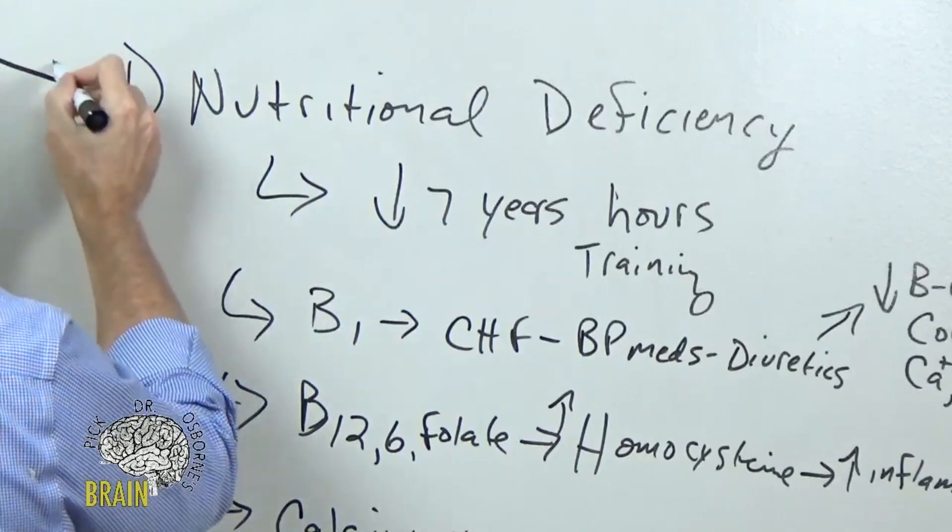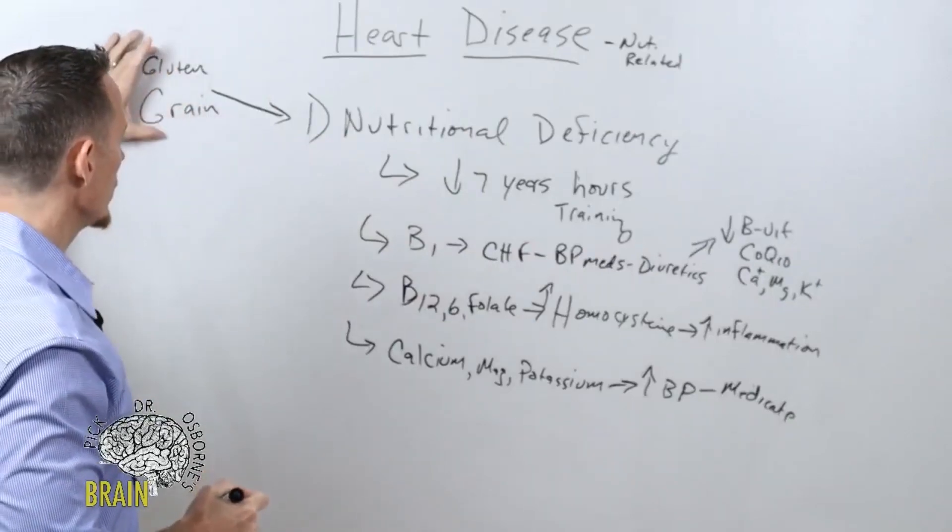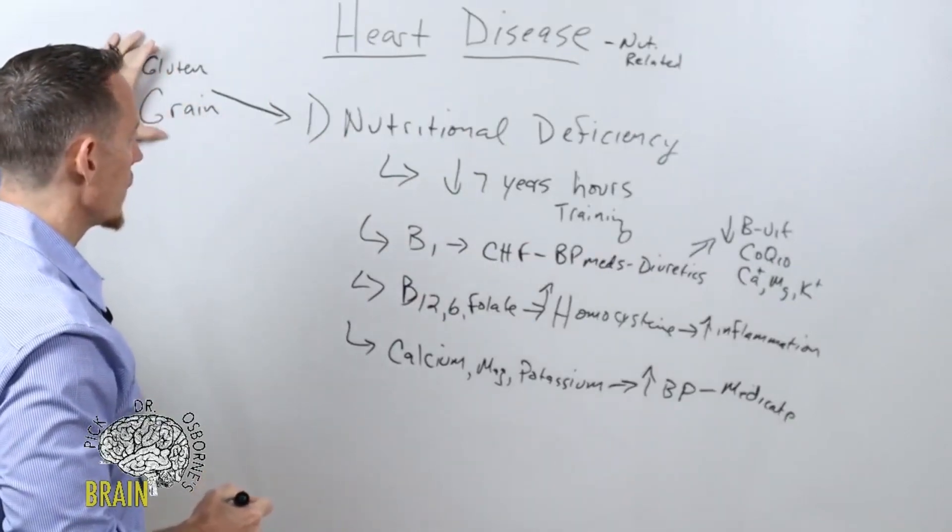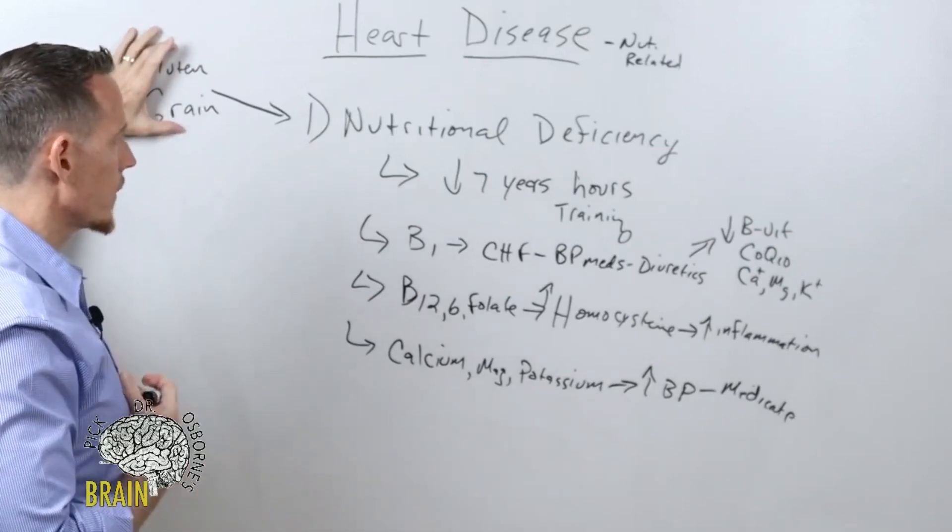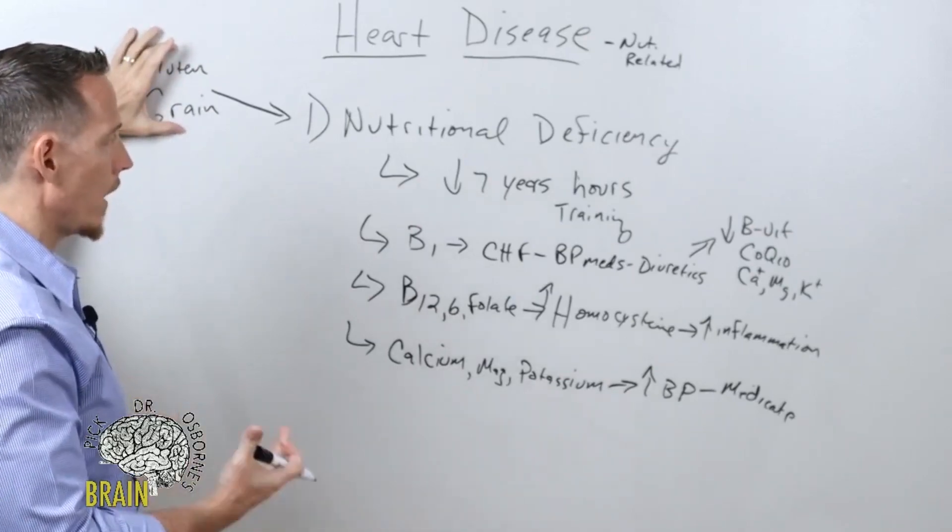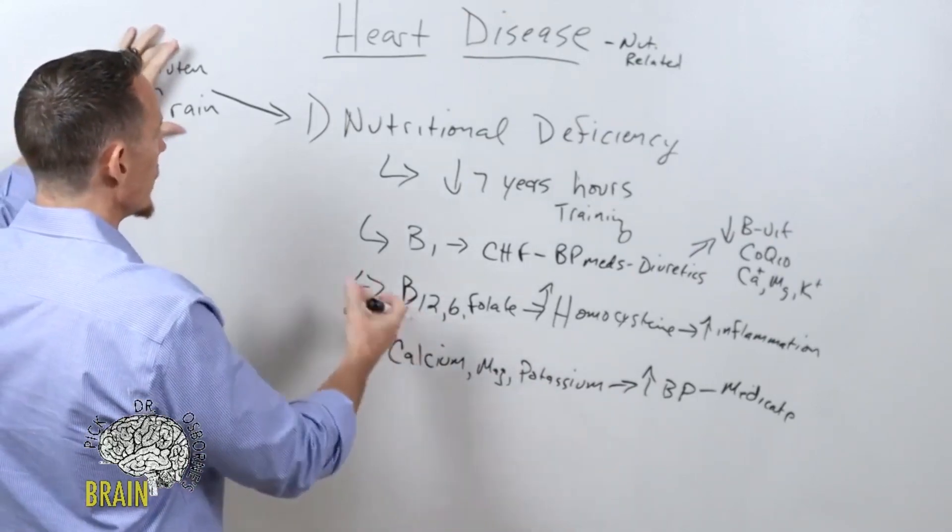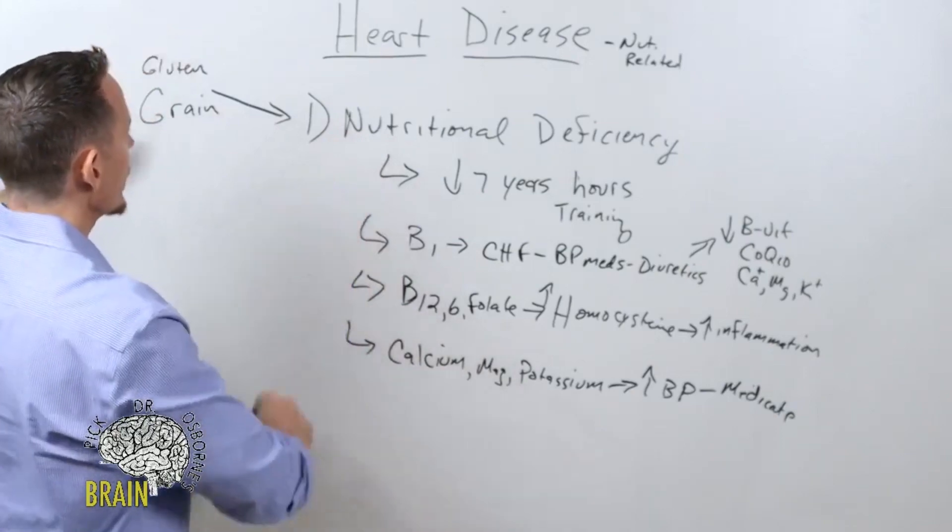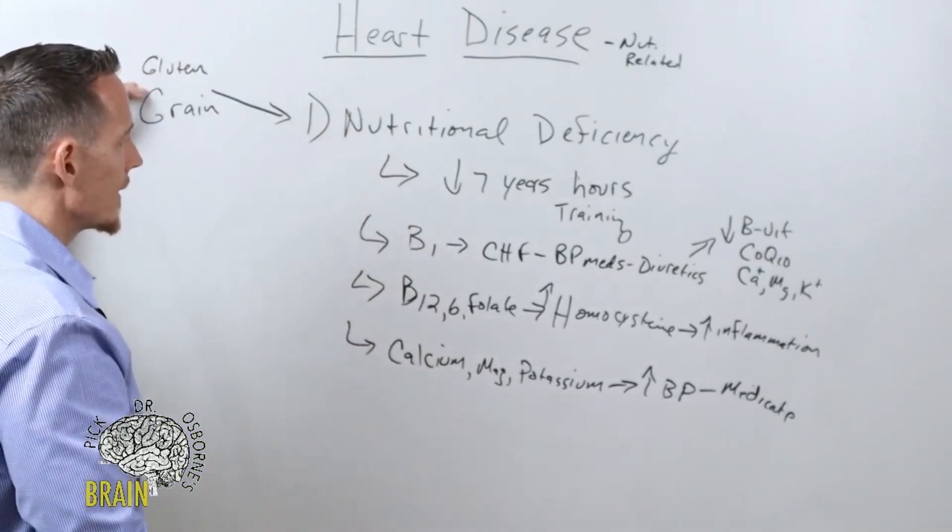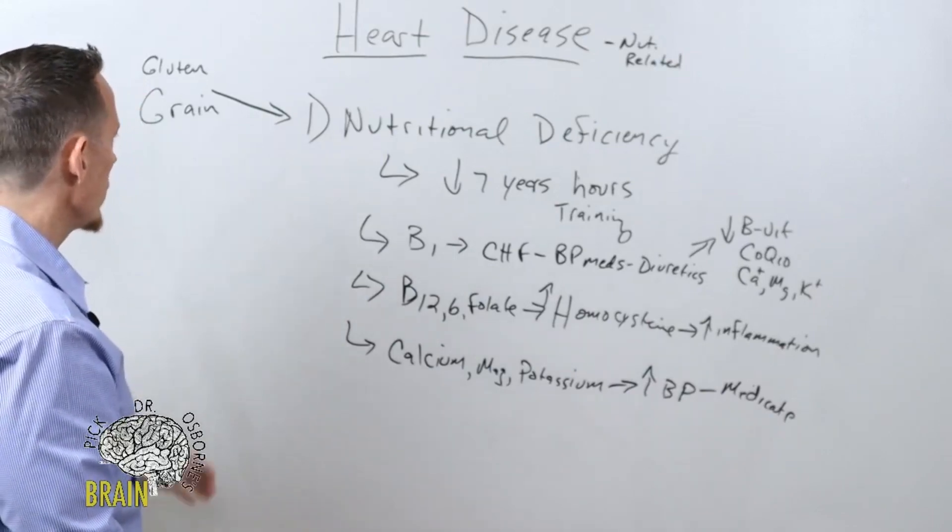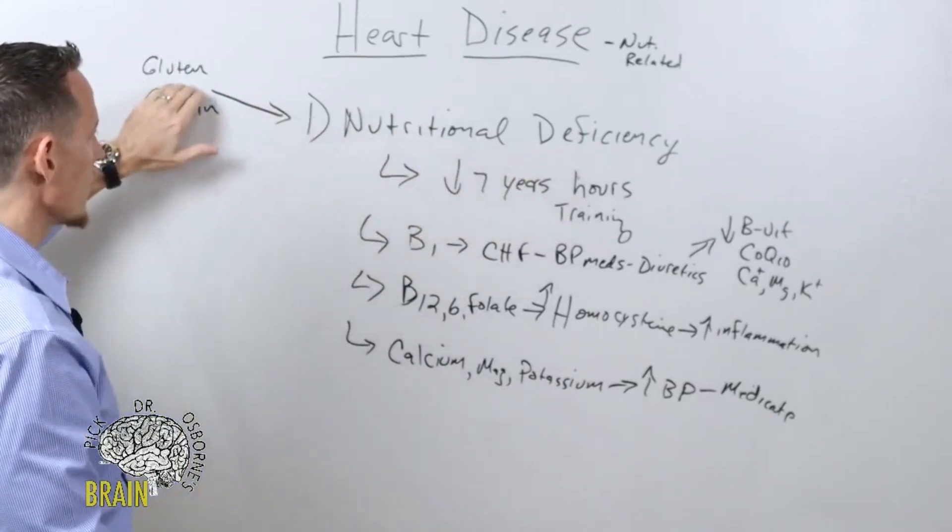We know that grain and gluten consumption can actually cause nutritional deficiencies, especially for those that are gluten sensitive. The reason why is that gluten can damage the GI tract, the lining of your gut, which makes you digest and absorb less effectively. So you end up developing nutritional deficiency as a result of damaging your GI tract from a food sensitivity issue. This is one of the main reasons why nutritional deficits can happen.